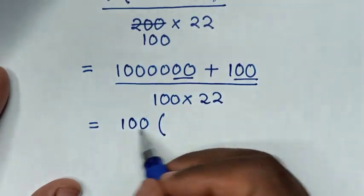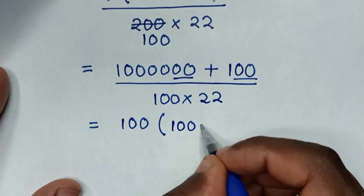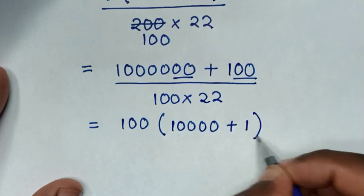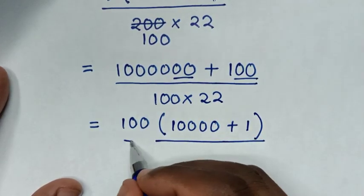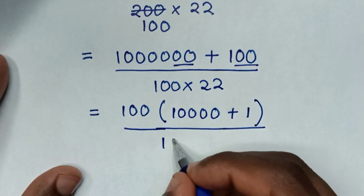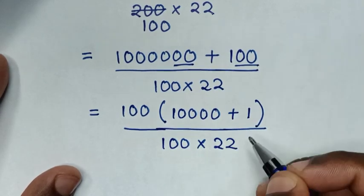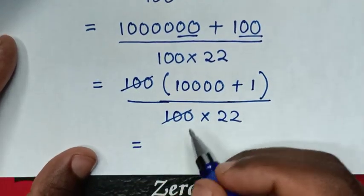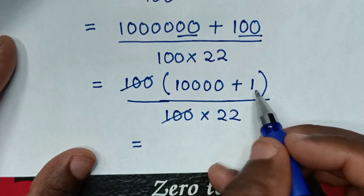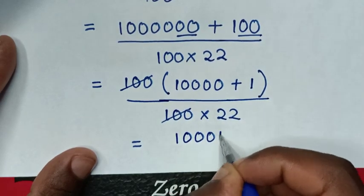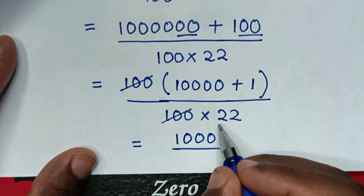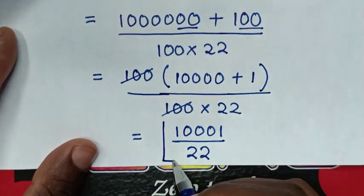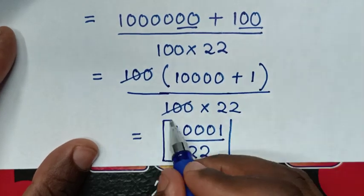This divided by this is 100, then plus 100 divided by 100 is 1, bracket over 100 times 22. This and this will cancel, so it will be equal to 10000 plus 1 is 10001, then over 22. So this is our final answer: 1001 over 22.